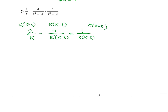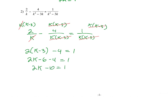I'm going to cancel the k, cancel the (k minus 3), and cancel everything here. So I have 2 times (k minus 3) minus 4 equals 1. So 2k minus 6 minus 4 equals 1. 2k minus 10 equals 1 plus 10. 2k equals 11. Dividing by 2: k equals 11.5.